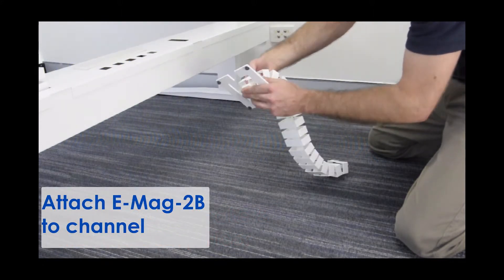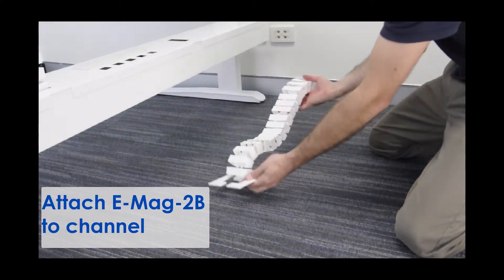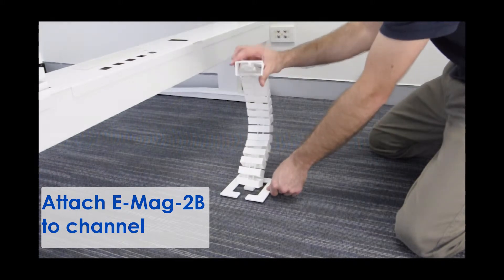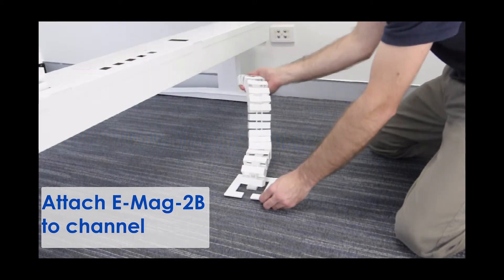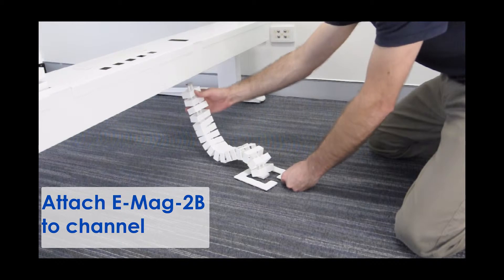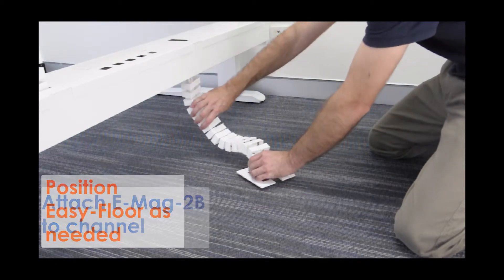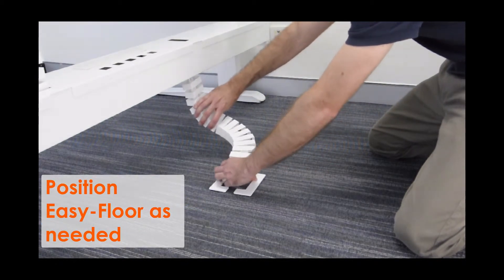Slide E-Mag 2B onto the top prongs of the Cablesnake length. Now attach E-Mag 2B to the underside of the channel close to the cable exit cutout. Position EasyFloor as needed.